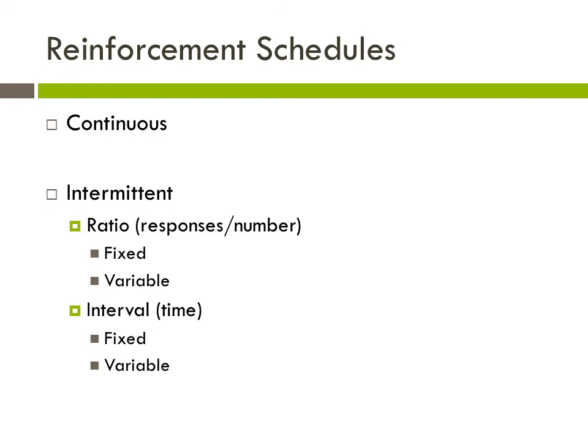A variable schedule means the reinforcer is applied after a variable number of responses — on an irregular basis. A good example of this is gambling. You don't know when you're going to win every time you're gambling.